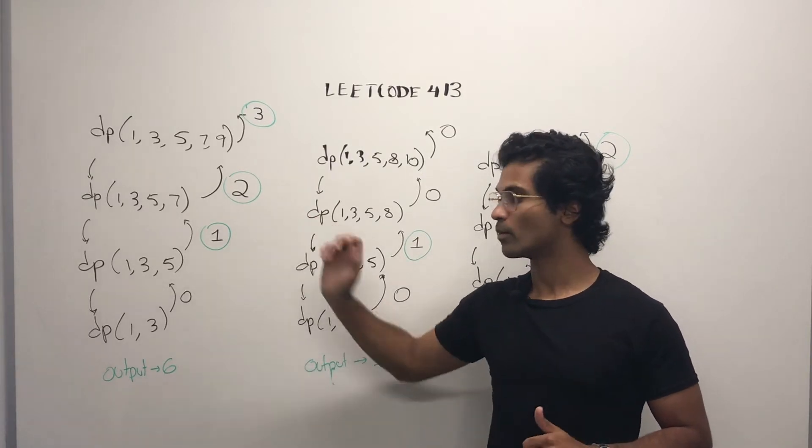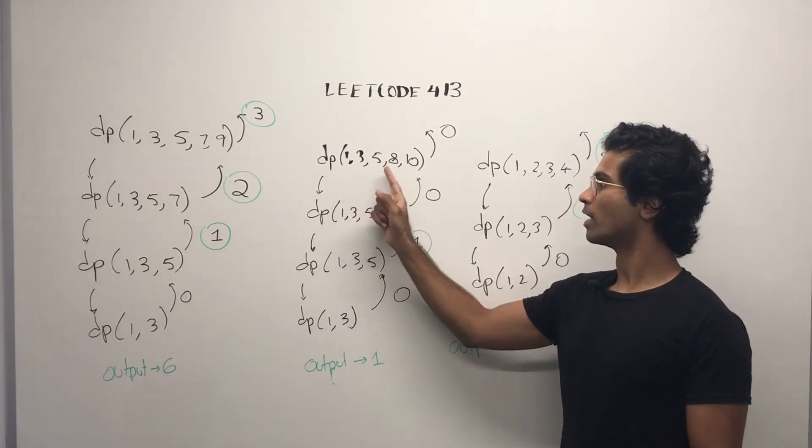So for this, we're going to have an output of 6. 1, 3, 5, 8, and 10.